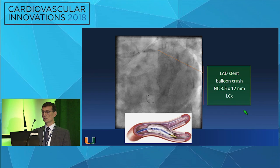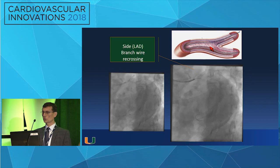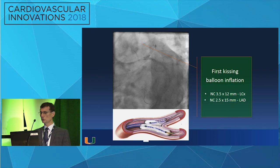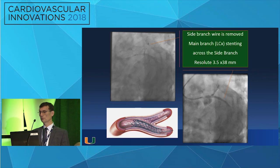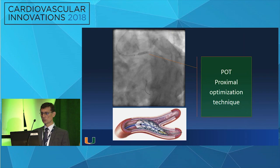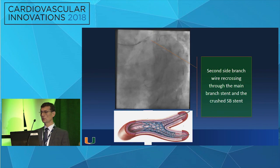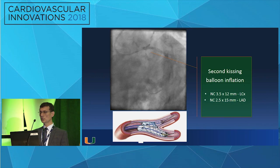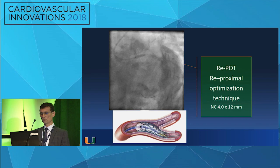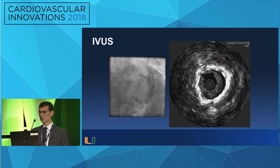We then crushed the first stent - these steps involve lots of complexity. We recrossed into the circumflex to do the first kissing balloon inflation with two non-compliant balloons. The side branch wire was removed. Then we did the second stenting, followed by the proximal optimization technique to facilitate wire crossing into the previously placed stent. Then we went back with a wire to recross into the circumflex, and performed the second kissing balloon inflation.